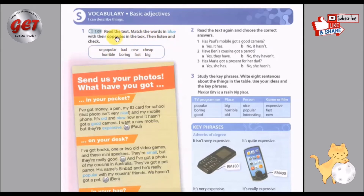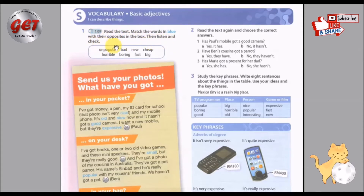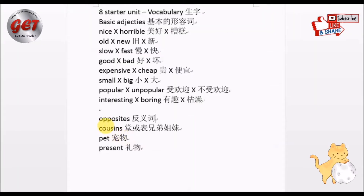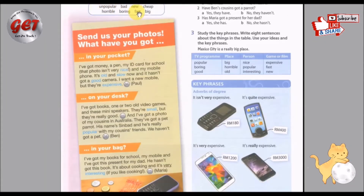Match the words in blue with their opposites in the box, then listen and check. 好，接下来我们要为这三个段落蓝色的字找出他们的反义词 (opposites，反义词)。好，让我们来看一下这条框里头有什么生字。